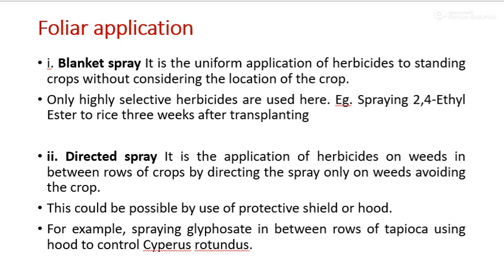Second is directed spray — the application of herbicide on weeds in between the rows of crops by directing the spray only on weeds, avoiding the crops. This type of herbicide is applied on targeted plants and is possible by use of a protective shield or hood. Example: spraying glyphosate in between the rows of tapioca using a hood to control Cyperus rotundus.